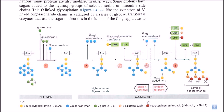Not only is glucose removed, but ER mannosidase enzymes are also present which cleave mannose residues as well. All of the glucose residues and a few mannose residues are cleaved inside the ER lumen. Finally, when a protein is destined to be delivered towards the Golgi apparatus, it is prepared by cleaving those glucose residues as well as some mannose residues.